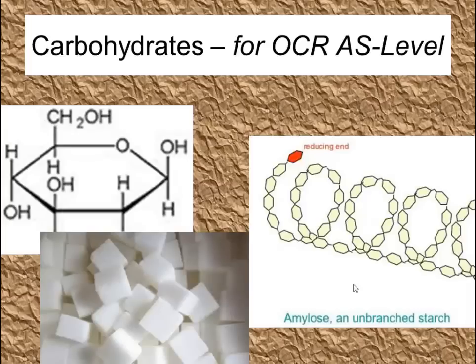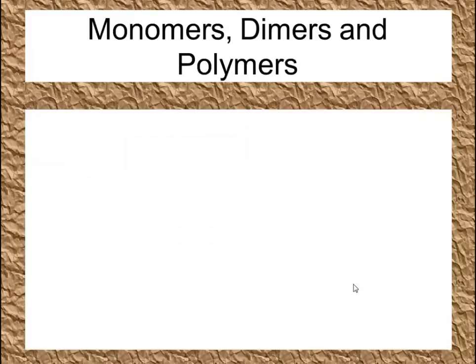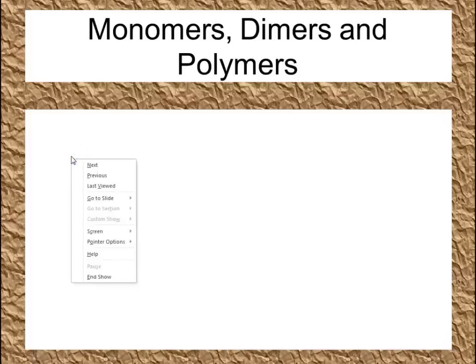Hello, we're going to be thinking in this video about carbohydrates at AS level. First of all we need to think about what monomers, dimers and polymers are. You should know about this from your GCSE chemistry, but here's a very brief refresher.